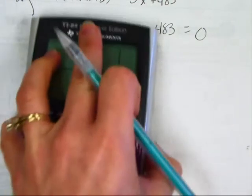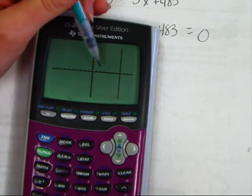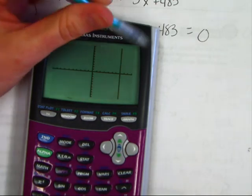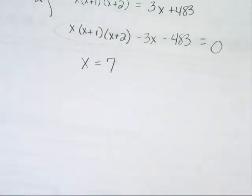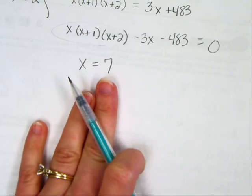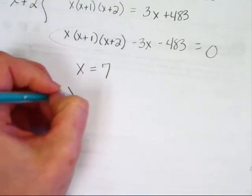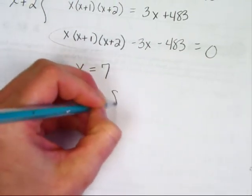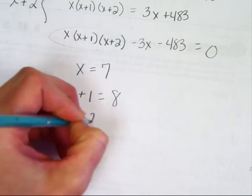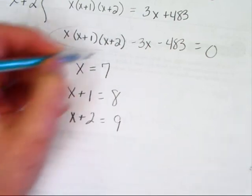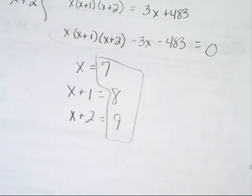So 7 is your value for x. That means x + 1, the next number is 8, and the next number, x + 2, is 9. So here are your three consecutive integers.